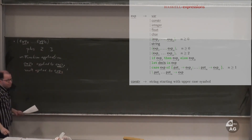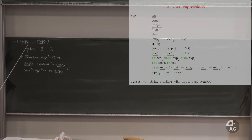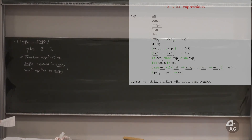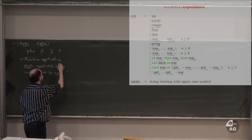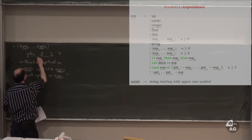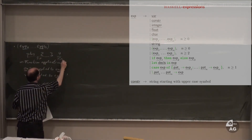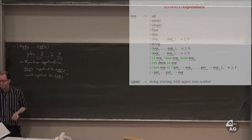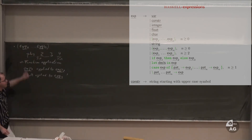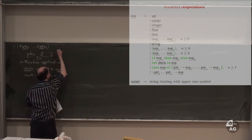For function application to be well-typed, exp1 must be a function expecting an argument of the type of exp2. For example, writing '(+) 2 3 4' causes a type error: '(+) 2 3' has type Int, and applying that to 4 (applying an Int to an Int) is a type error. You can leave out brackets as long as there is no ambiguity.